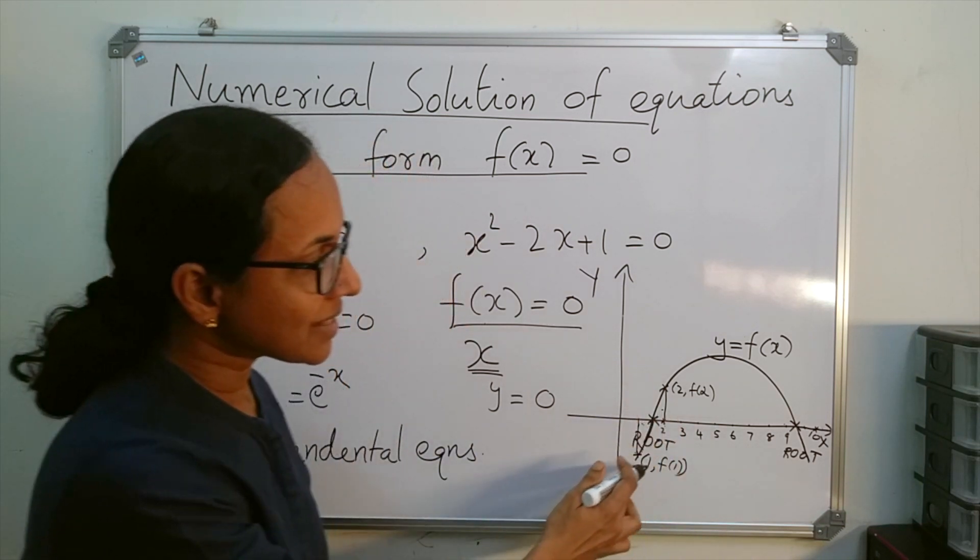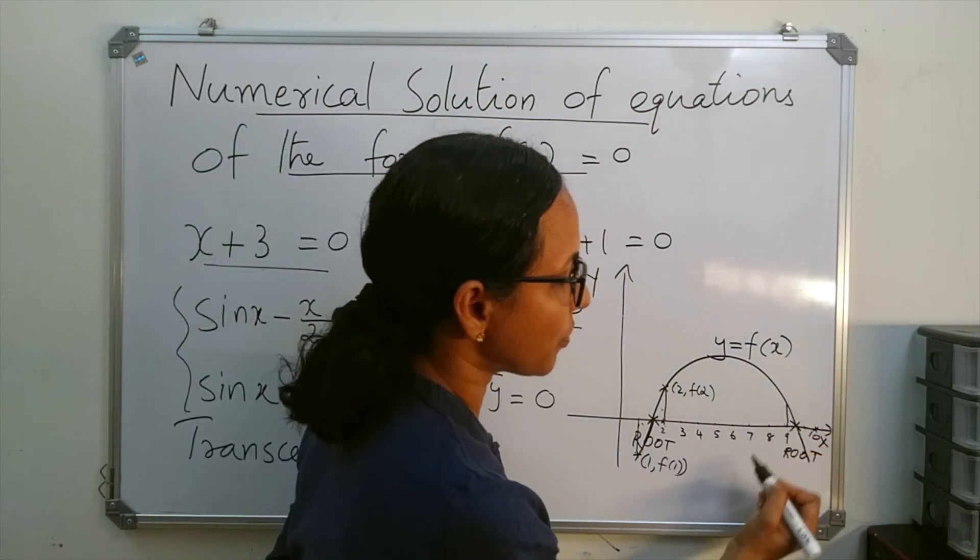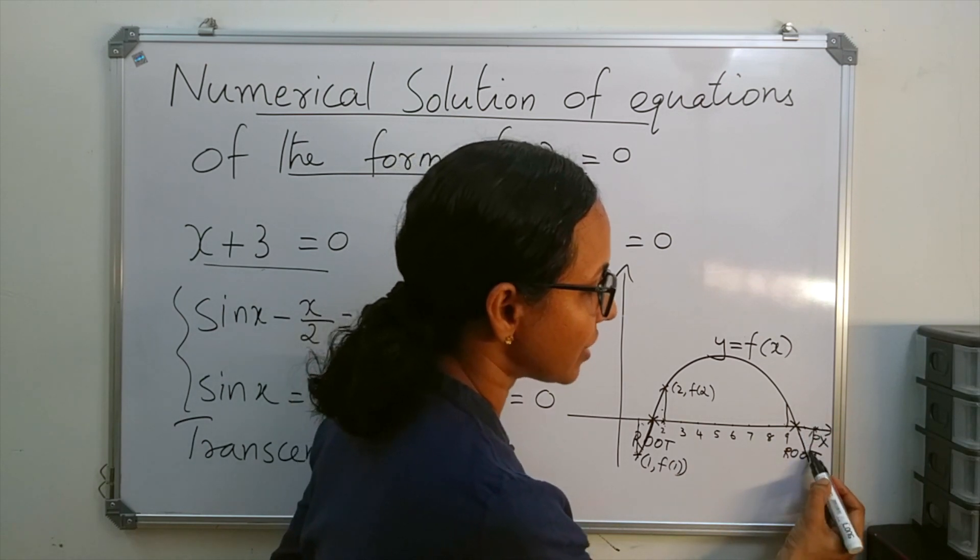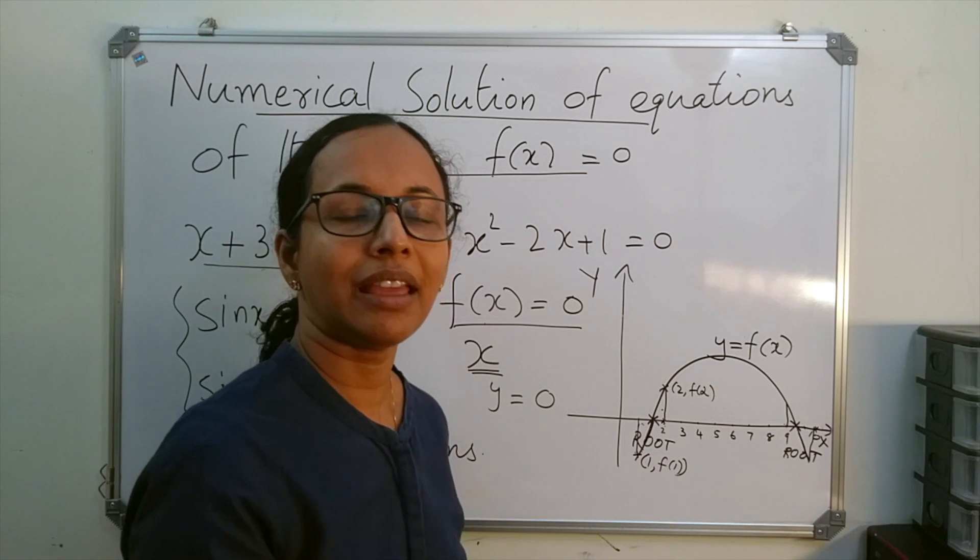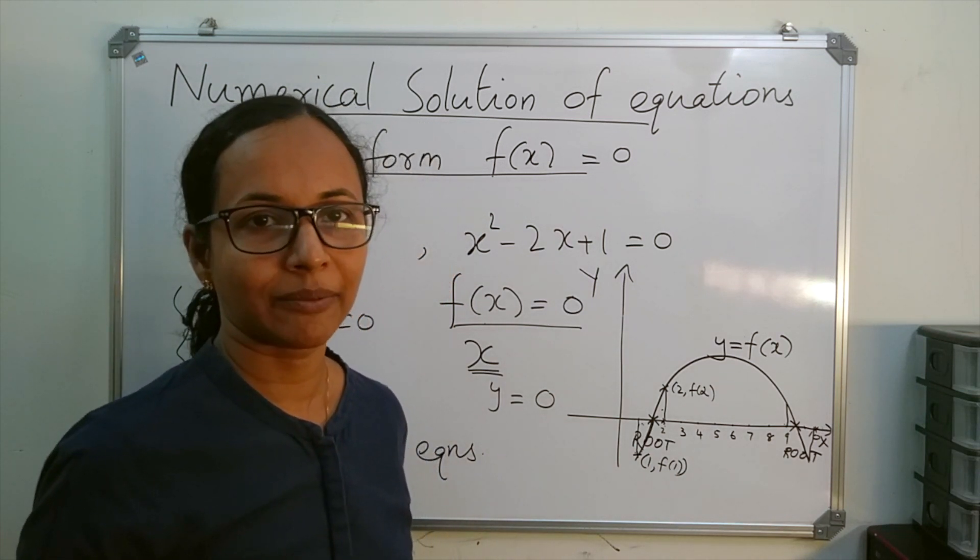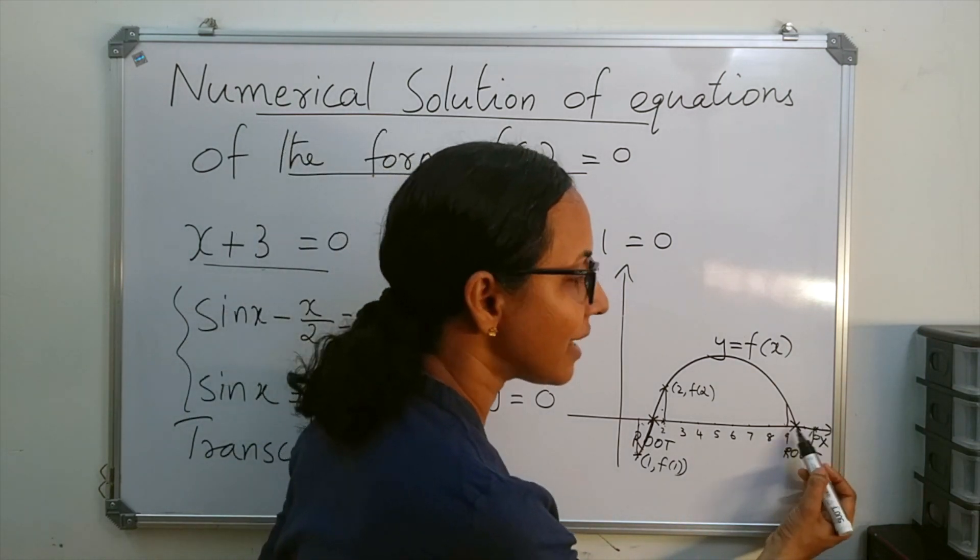We can examine this here also. You see f(9) is positive and f(10) is negative. If f(9) and f(10) are of opposite signs, then there is a root between 9 and 10.